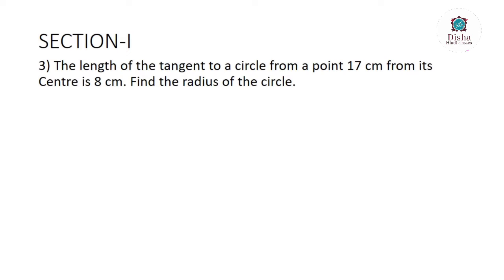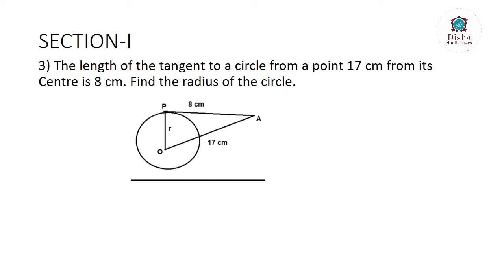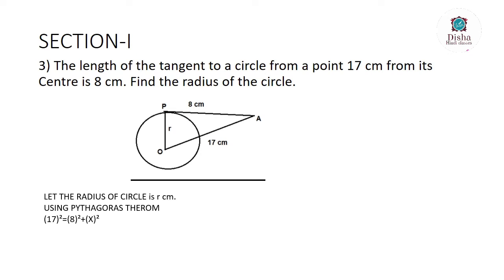Pause the video and solve it. Now let's move to the solution — here is the diagram. The distance between P and A (the tangent) is 8 centimeters, and the distance from O (the center of the circle) to point A is 17 centimeters. We have to find the radius, so let us consider PO as x centimeters, the radius of the circle. By using Pythagoras' theorem, 17² = 8² + x².